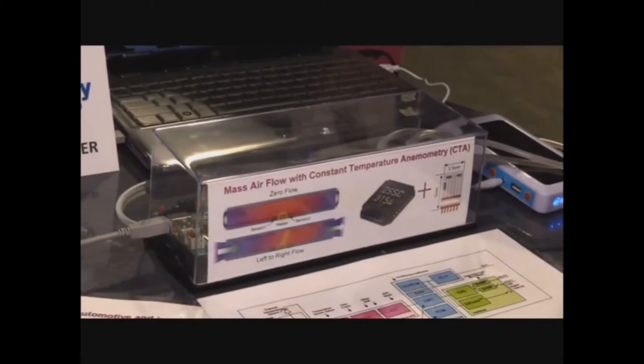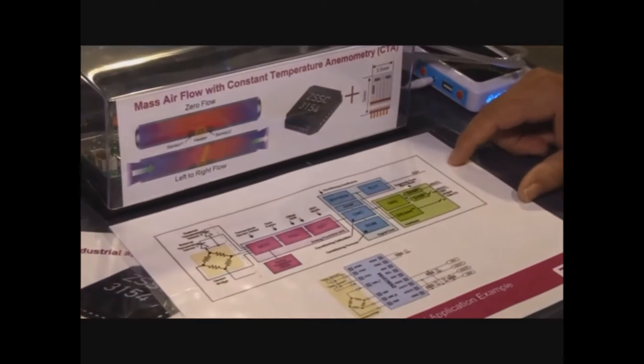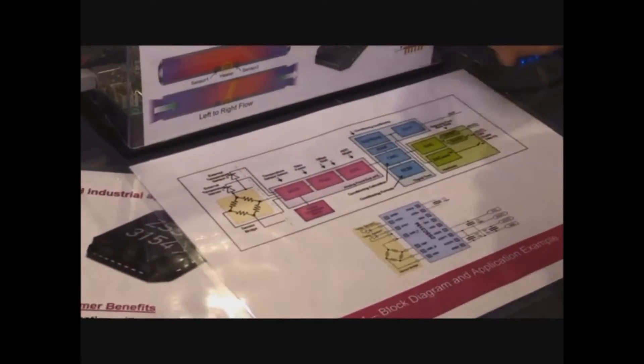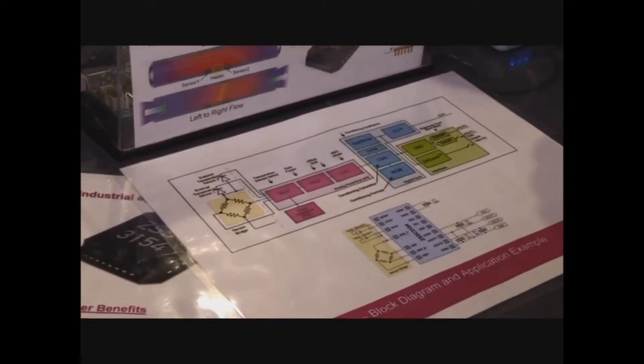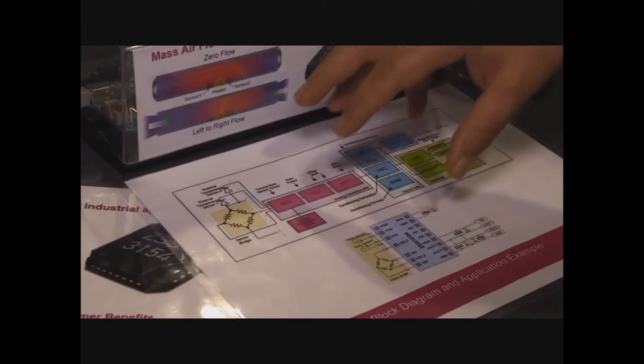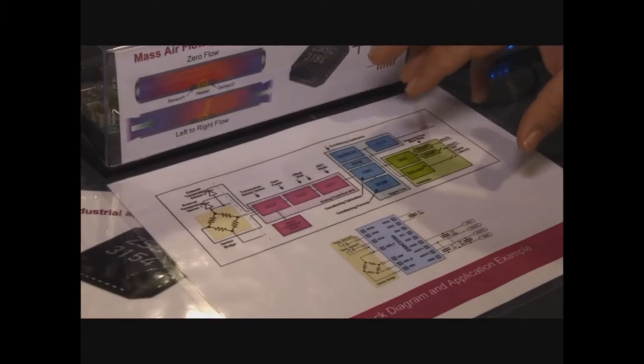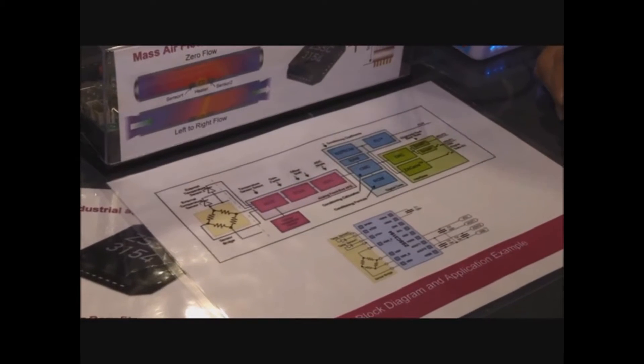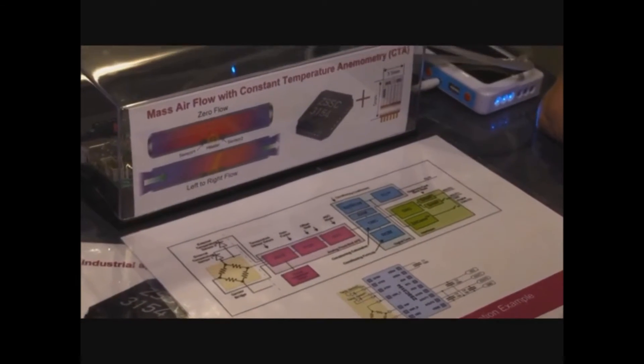This is a basic block diagram. It interfaces with the two sensor bridges. It also has two temperature diode measurements, and then we amplify that signal, digitize it, and do the digital correction and temperature compensation.